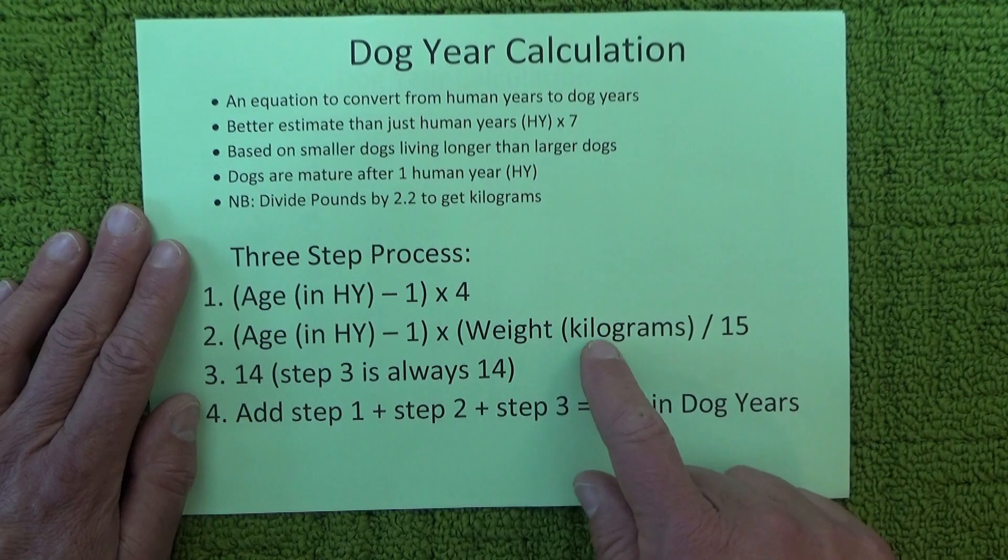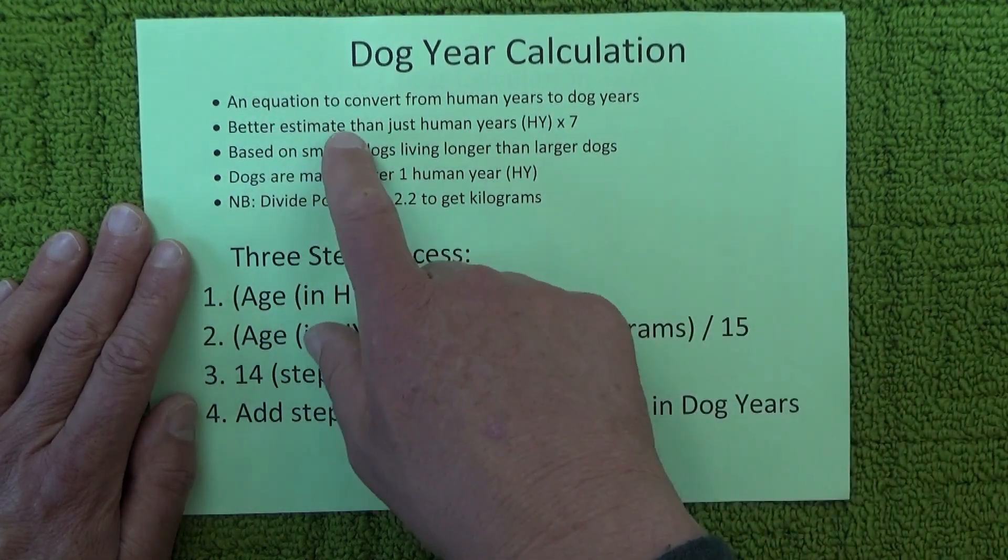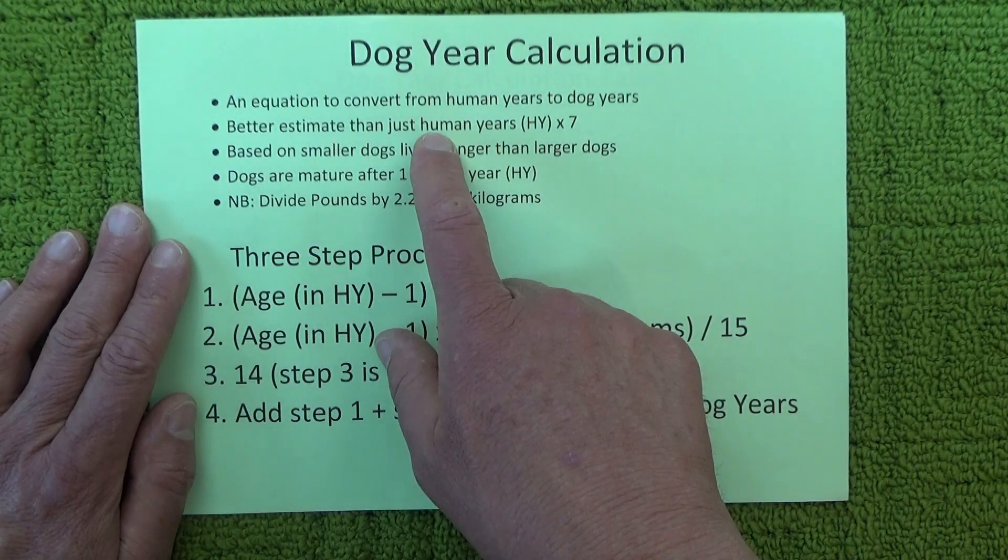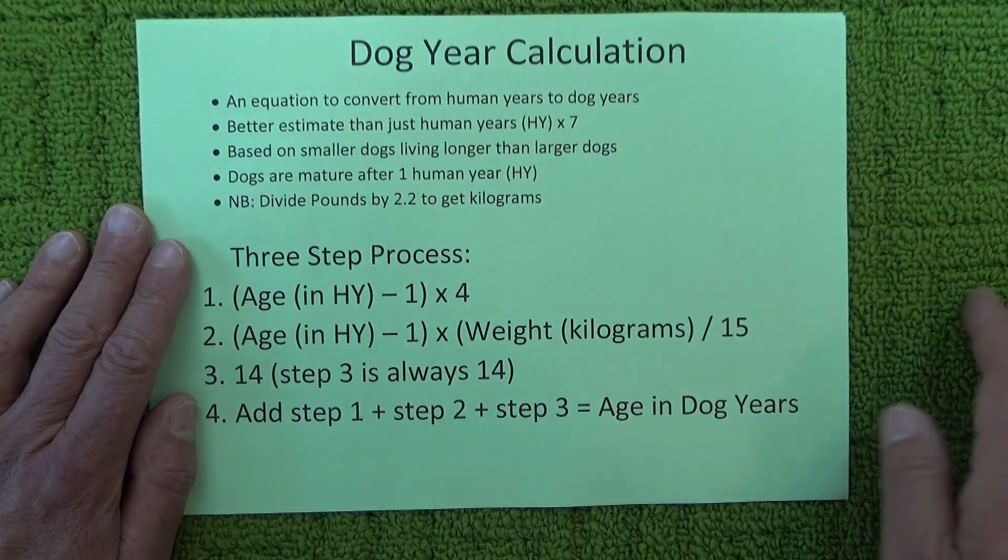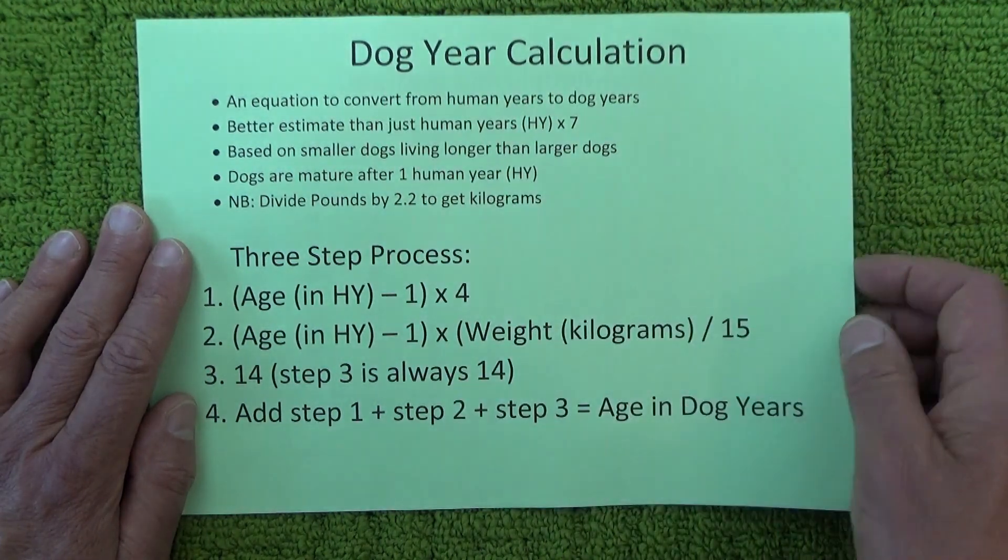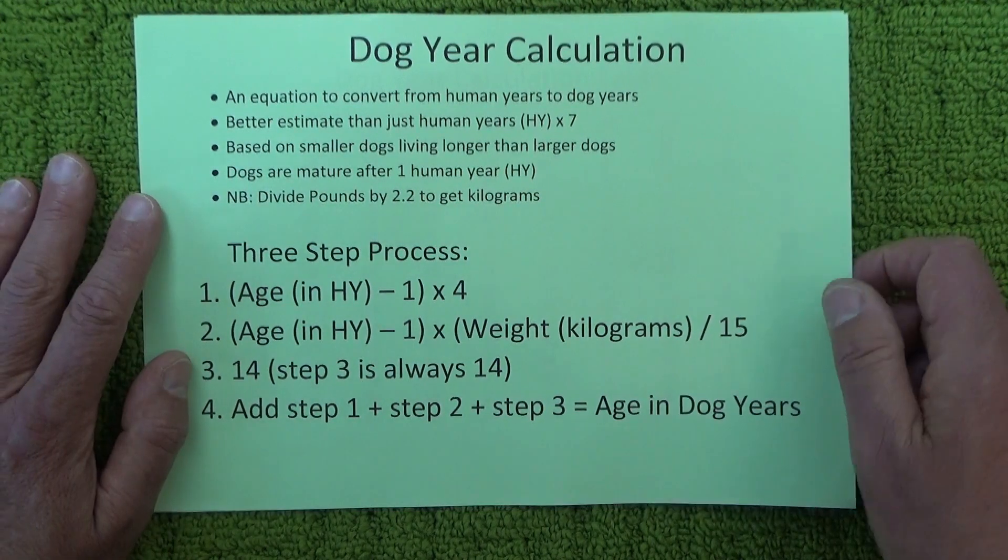This calculation actually factors weight into the calculation, and it's a better estimate than just multiplying years by seven. Dog years is a way of converting a dog's age to make it more comparable to a human's age.